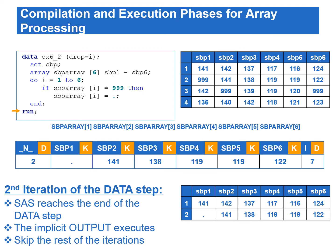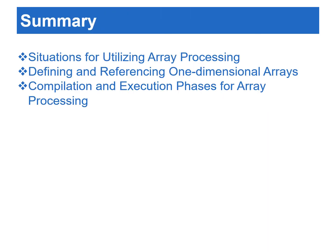Hope you have the idea of array processing at this point. In this video, we learned how to create an array by grouping a list of variables. Once variables are grouped into an array, we can utilize an iterative do loop to loop along with these variables. There are many rules for creating an array by using the array statement, and knowing these rules is essential for creating a program using array processing. We also went over the compilation and execution phases of array processing. Please remember that the array name and its references are not included in the PDV.